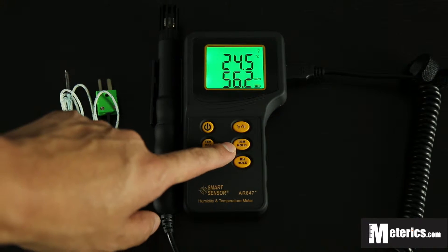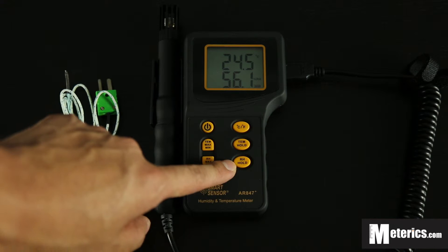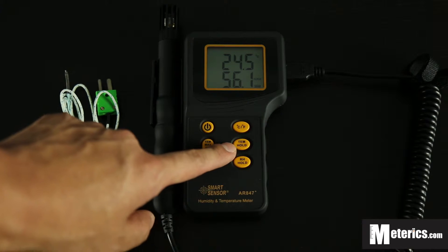Below that, you have temperature hold and relative humidity hold. These two buttons have the same functions, but the top one is for holding the temperature.